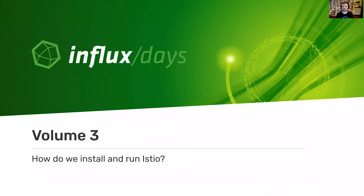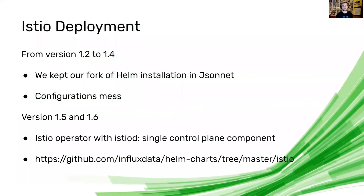How do we run it? We've run Istio since version 1.2 and are now at 1.6 upstream. From version 1.2 to 1.4 we kept our own fork of the installation. The original installation used Helm, which we don't use internally — we use JSON and Argo CD for continuous deployments. So we had to re-template all the YAML from Helm every time we needed to update, reconcile what changed with the new version — about a week of work each time — and it was not fun.